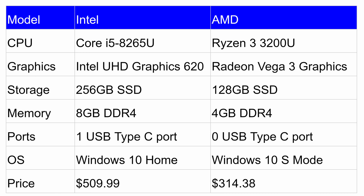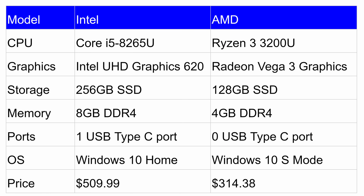The Intel version comes with full Windows 10 Home Edition, whereas the AMD version comes with a limited version of Windows that Microsoft sells under the name Windows 10 S mode. So it's essentially a restricted version of Windows. The price for the Intel is $510 whereas the AMD is selling for about $314. I'll throw a link in the description so you can check for the current price.